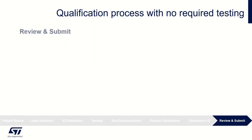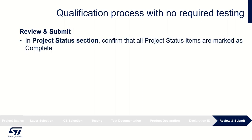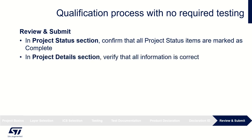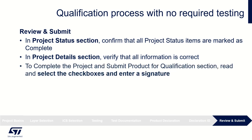We are almost done with this case. The rest is only verification and submitting. In the Review and Submit tab: for the project status section, confirm that all project status items are marked as complete. For the project details section, verify that all information is correct including your organization's contact information. For the complete the project and submit section, read and select the checkboxes and enter a signature to complete the listing.